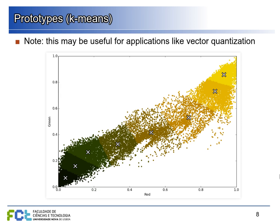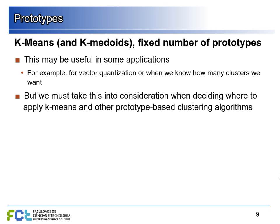So K-means has problems with defining the number of prototypes, different dispersions, and different variances. However, these can also be advantages. In vector quantization, for example, we actually need to specify how many centroids we have and split high-density regions into different blocks for quantization. K-means has a fixed number of prototypes and uses distance measures to split clusters at some midpoint between prototypes — this can be useful in some applications and problematic in others.